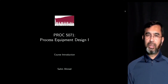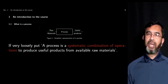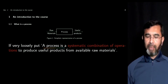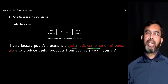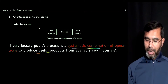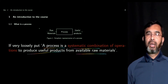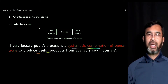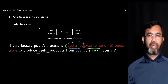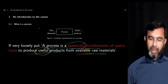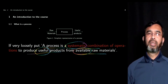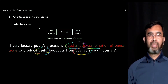First, let's look at what a process means. Very loosely, a process can be considered as a systematic combination of operations to produce useful products from available raw materials. Now let's look at these three aspects: the systematic combination should follow some engineering principles, you should produce something useful, and the raw materials should be available.